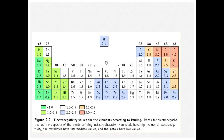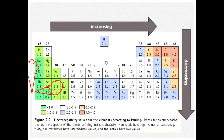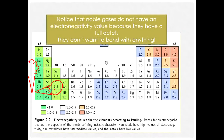You can use the ice cream cone mnemonic for electronegativity just as for ionization energy: values decrease going down and increase going across. One key difference: noble gases are missing from the electronegativity chart because they have a full octet and won't bond or share electrons with anything. However, noble gases do have ionization energy values — it takes a lot of energy to strip an electron from them.